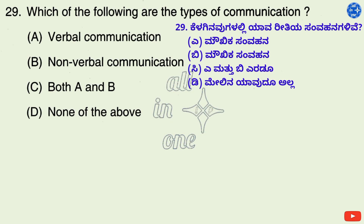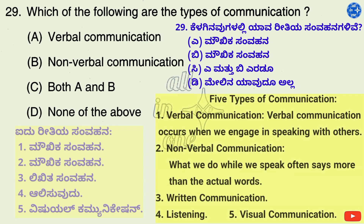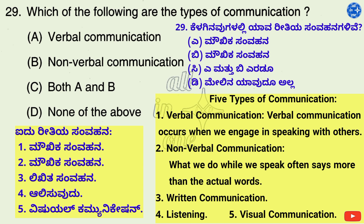Question 29. Which of the following are the types of communication? Options: A. Verbal communication, B. Non-verbal communication, C. Both A and B, D. None of the above. Five types of communication: 1. Verbal communication — occurs when we engage in speaking with others. 2. Non-verbal communication — what we do while we speak often says more than the actual words. 3. Written communication. 4. Listening. 5. Visual communication. Therefore, right option is C: Both A and B.